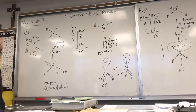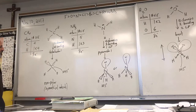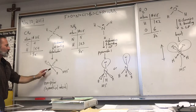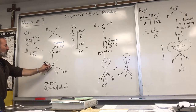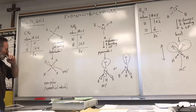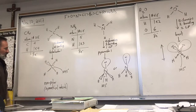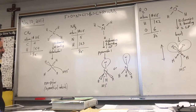Four domains points to a tetrahedral structure. The way you would portray the tetrahedral structure is to have two bonds in the plane of the board, one coming out at you, one going behind. All the bond angles between them are 109.5°.